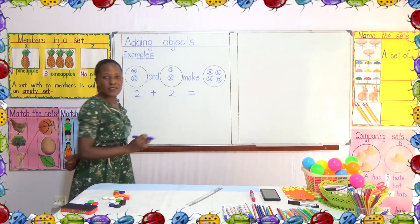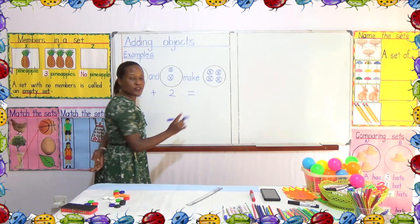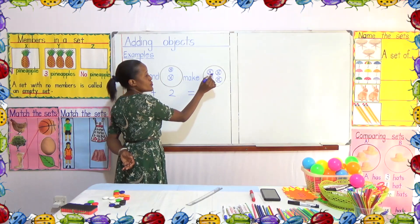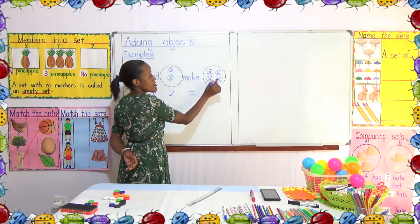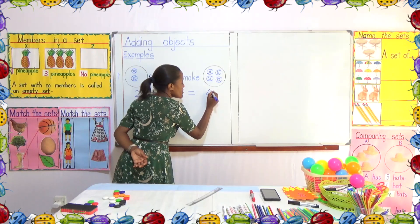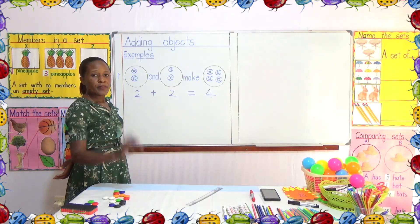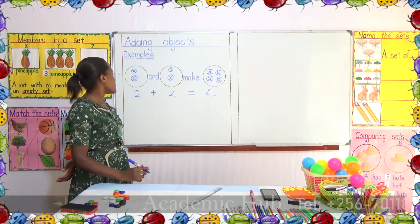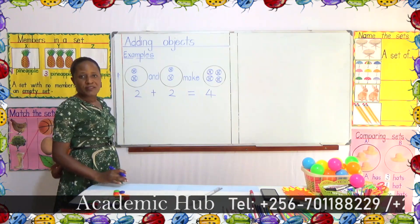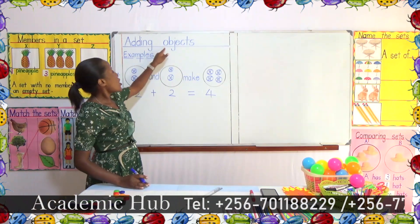We count these ones here. Let's count together, children. One, two, three, four. So our answer will be four. That is what we are doing today — we are adding objects.